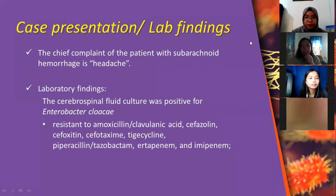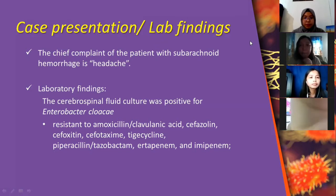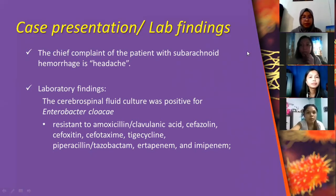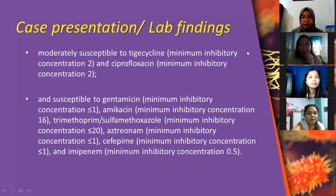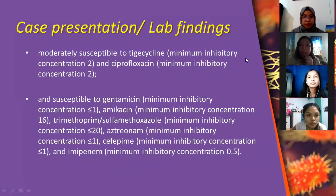The organism is resistant to amoxicillin-clavulanic acid, cefazolin, cefoxitin, cefotaxime, tigecycline, piperacillin-tazobactam, ertapenem, and imipenem. It is moderately susceptible to tigecycline with a minimum inhibitory concentration of 2, and ciprofloxacin with a minimum inhibitory concentration of 2. It is susceptible to gentamicin with a minimum inhibitory concentration of less than or equal to 1, and amikacin with a minimum inhibitory concentration of 16.